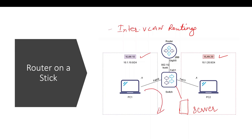If you have a Layer 3 device, you should be capable of doing both Layer 2 and Layer 3. So, if you have a Layer 3 device, you can use it for inter-VLAN routing.